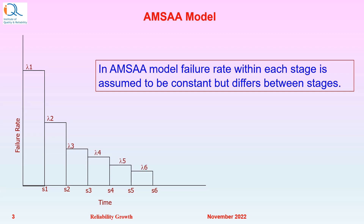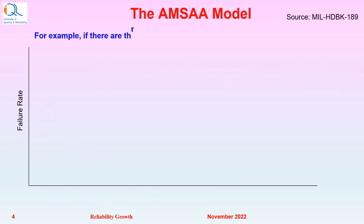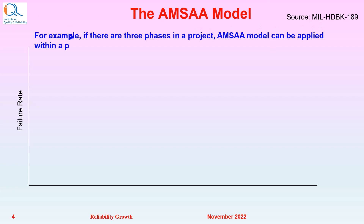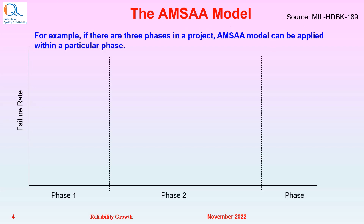It reduces to lambda 6 for stage 6. Although the reduction has been in steps, we can approximate this reduction in failure rate by a continuous curve, shown in blue color. For example, if there are three phases in a project, the AMSA model can be applied within a particular phase.